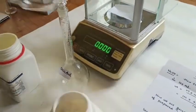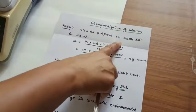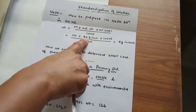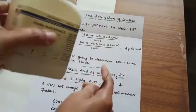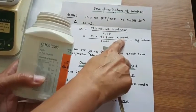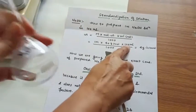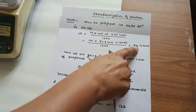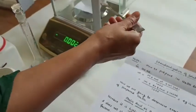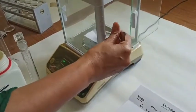Now we are going to weigh sodium hydroxide for 100 ml. How to prepare 1 molar NaOH solution in 100 ml? The formula is: Weight = Molarity × Molecular Weight × Volume ÷ 1000. The molecular weight is 40, the volume is 100 ml, so we divide by 1000. To prepare 1 molar solution we have to weigh 4 grams of NaOH. If you change the volume, then the weight will also change, since the molecular formula is the same.